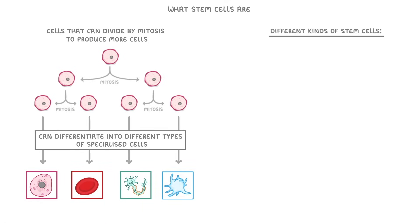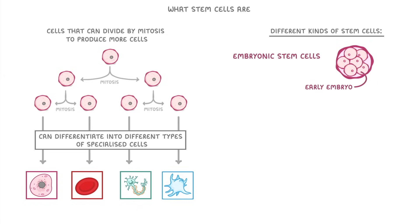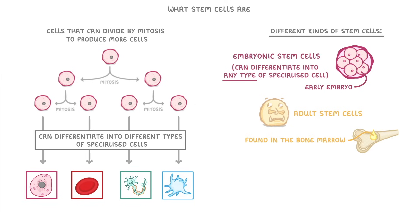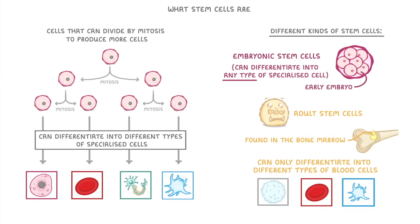There are lots of different kinds of stem cells, but the main two that you need to know about are embryonic stem cells, which are found in the early embryo and can differentiate into absolutely any type of specialized cell, and adult stem cells, which are found in the bone marrow of people of all ages but can only differentiate into different types of blood cells.